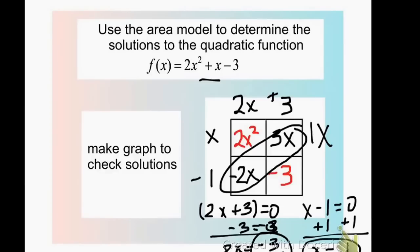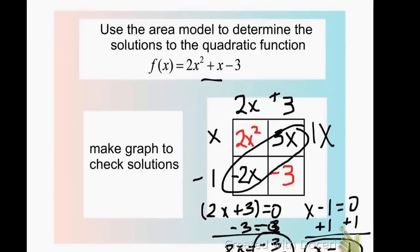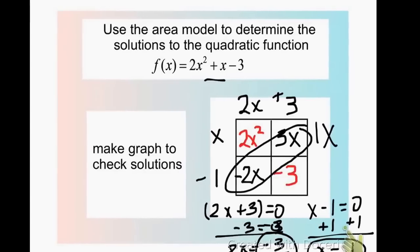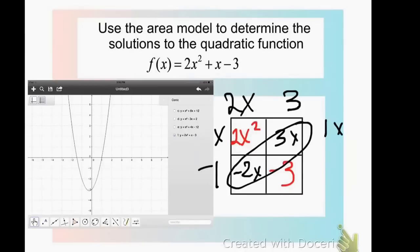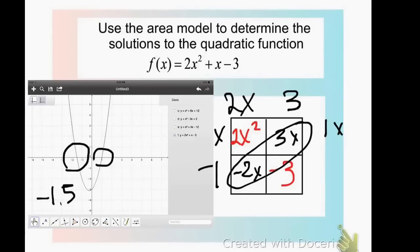On the next slide I've added the graph. The x-intercepts should be at negative 3 halves and 1. Looking at the graph, there's an intercept between negative 2 and negative 1 at negative 1.5, and another at 1 — confirming the answers, since negative 3 halves equals negative 1.5. We'll work on this more tomorrow, so watch this and have any questions ready for class.